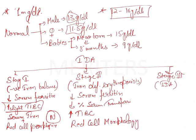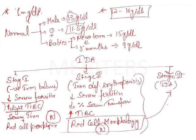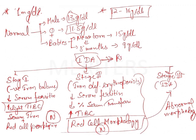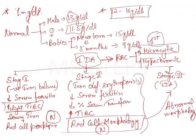Stage three has all the features of stage two, plus abnormal morphology of the red cells. In iron deficiency anemia, the red blood cells are microcytic and hypochromic. Importantly, microcytosis appears first, and then hypochromia appears. These are very important facts on which exam questions can be asked.